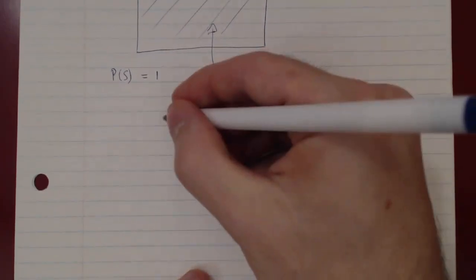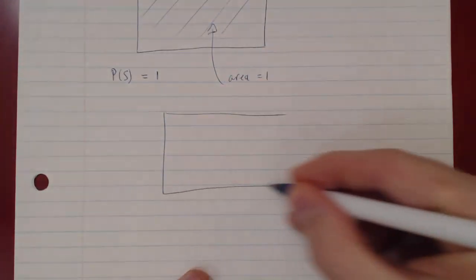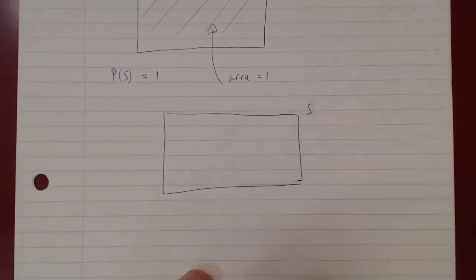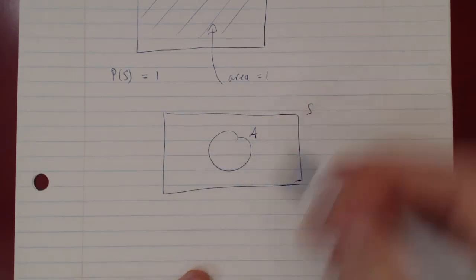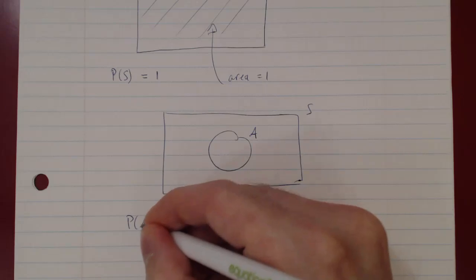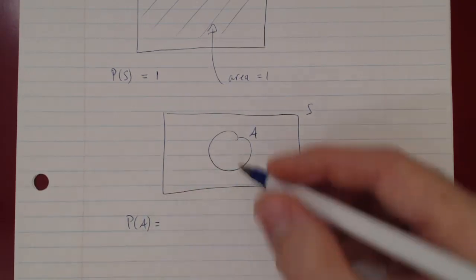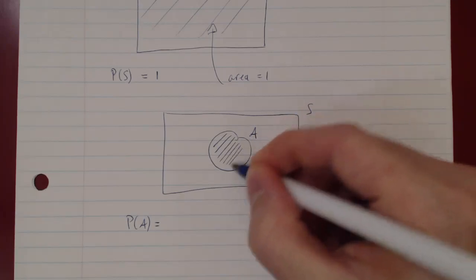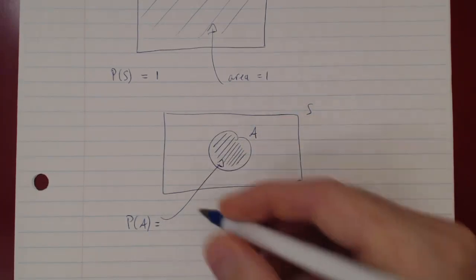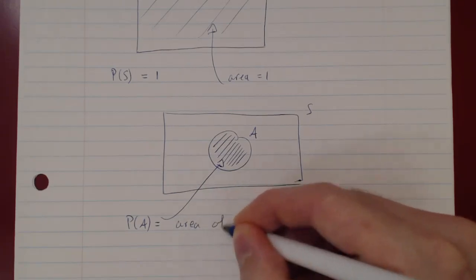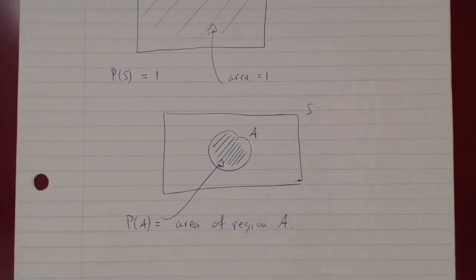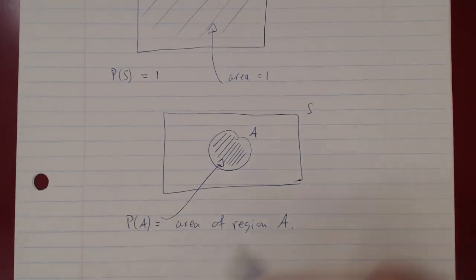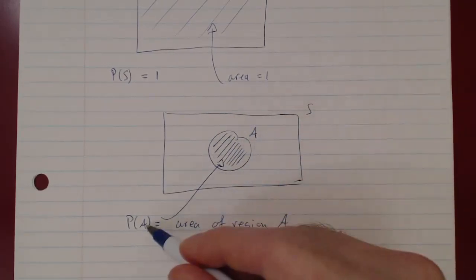If you take an event in a sample space — consider a rectangular box. This is the sample space S, and you have an event, a subset A, of the sample space S. Geometrically, the probability of A is simply represented by the area of the region in the Venn diagram. A Venn diagram gives you a way to visualize probability as the area of the corresponding region.